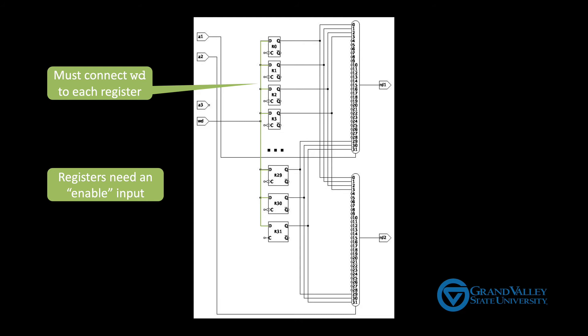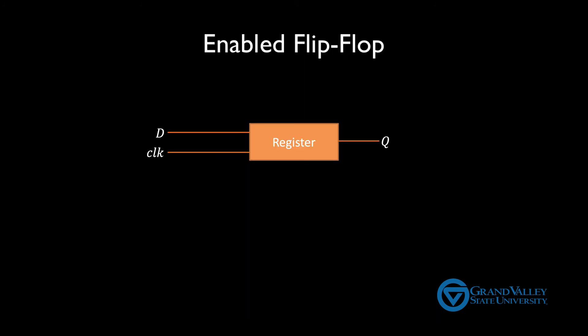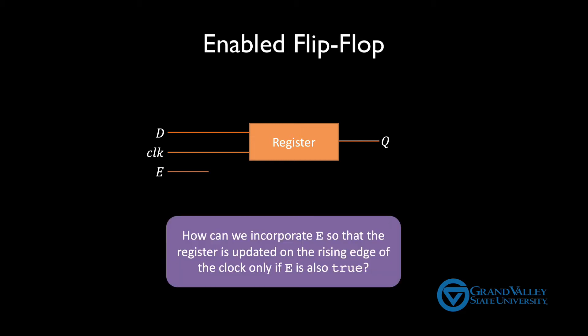So let's see if we can figure out how to add an enable input to the flip-flop we developed in a previous video. So here's the abstract flip-flop we've been working with thus far. The additional E input stands for enable. The register should only take on a new value on the rising edge of the clock if E also has a one when the clock rises. So pause the video and try to come up with two or three different ways of doing this.